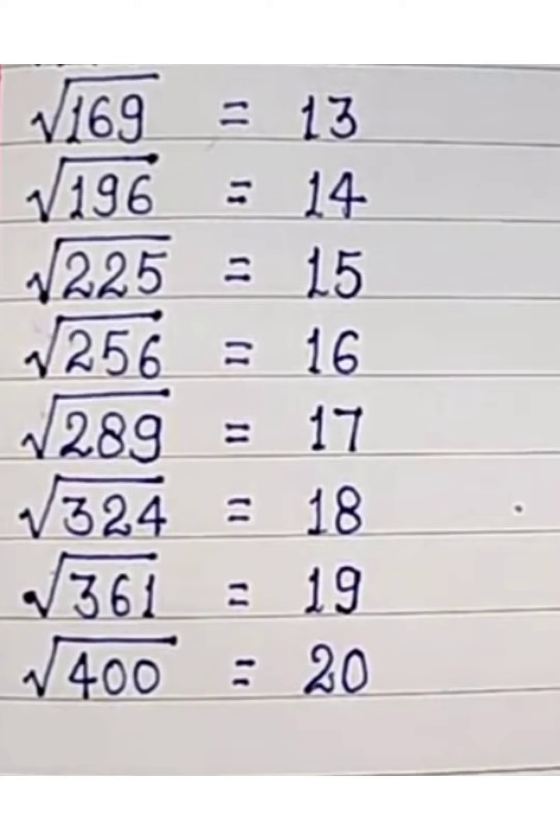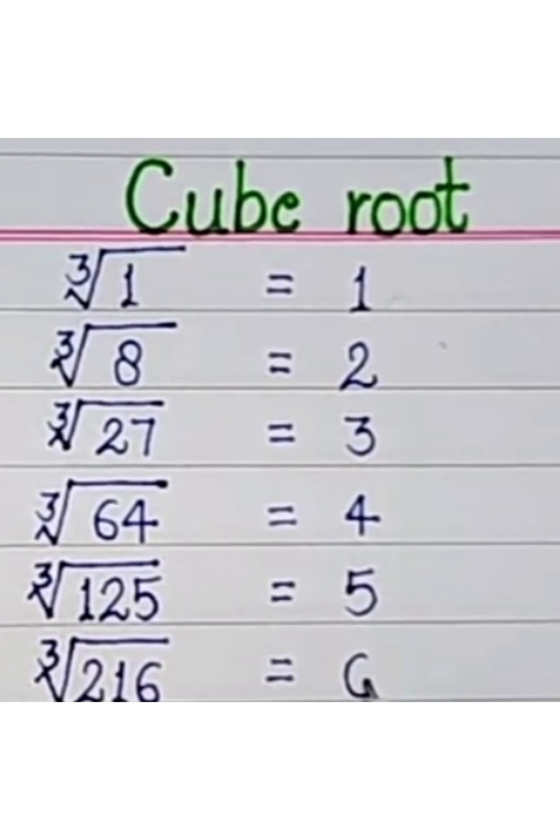1 cube root is 1, 2 cube root is 8, 3 cube root is 27, 4 cube root is 64, 5 cube root is 125.